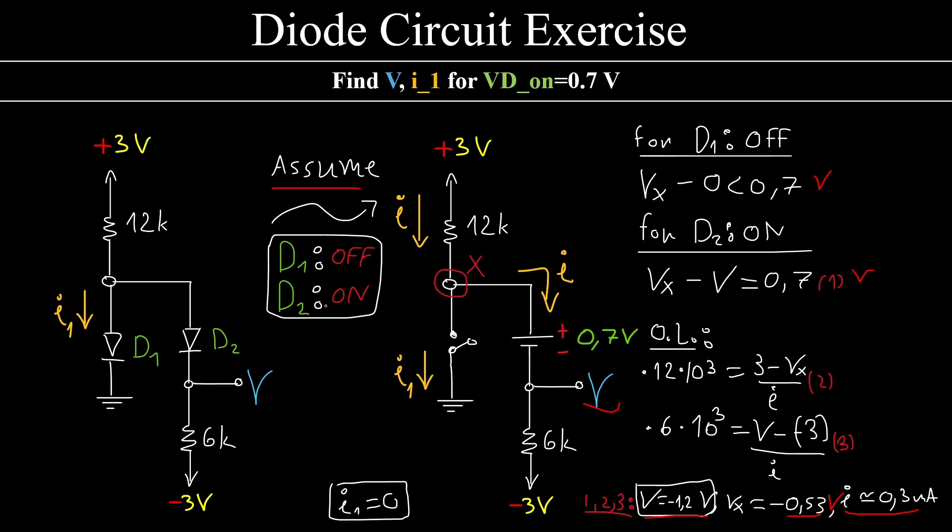Which means that I don't have to also check another condition, for example, the case where both of these two were off. Because only one condition is going to be true. No other condition will be true at the same time. And that's it. Check out the diode playlist for more diode videos and exercises. Study well and take care. Bye bye.